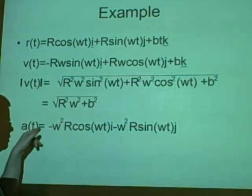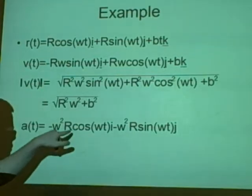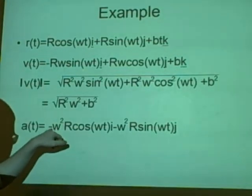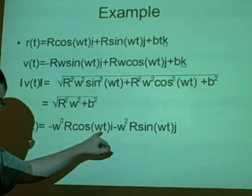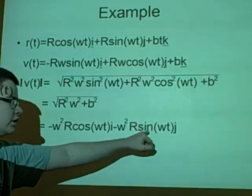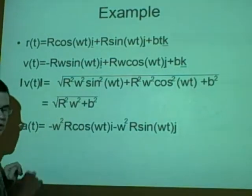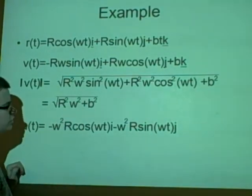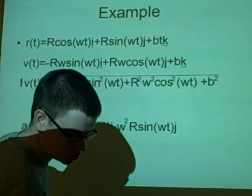To get the acceleration we differentiate the velocity, which gives us minus omega squared r cosine omega t i minus omega squared r sine omega t j. One thing we can recognize from this is that speed is constant, as there is no t involved and t is what changes, which is time.